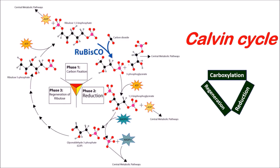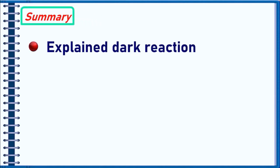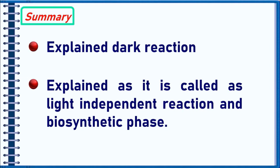This is how the Calvin cycle is represented with carboxylation process, reduction, and regeneration. Summary: In this video we have explained dark reaction as well as explained why it is called light independent reaction and biosynthetic phase.